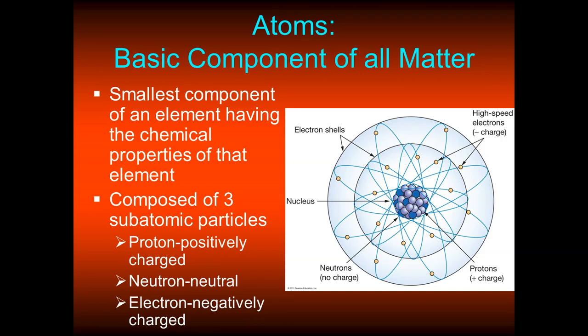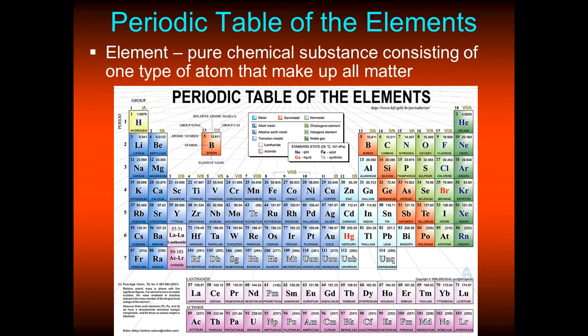An element is a pure chemical substance that consists of one type of atom that makes up all matter, and we have our periodic table of the elements. Similar elements are grouped together. On the left-hand side in blue are the metals; the elements in light green are non-metals; the red elements in between are called semi-metals, which have some properties of metals and some of non-metals; and the last dark green column contains our noble gases.